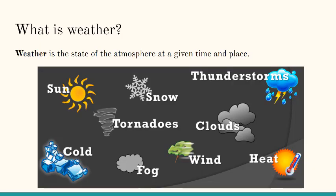Weather is the state of the atmosphere at a given time and place. This includes thunderstorms, clouds, heat, wind, tornadoes, snow, sunshine, cold weather, and fog.